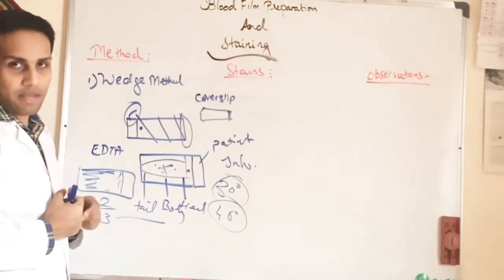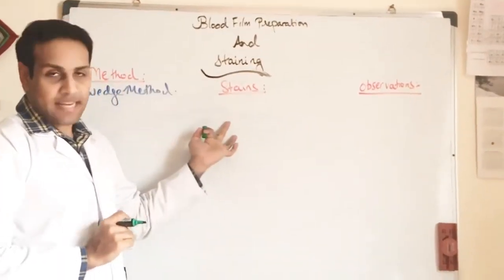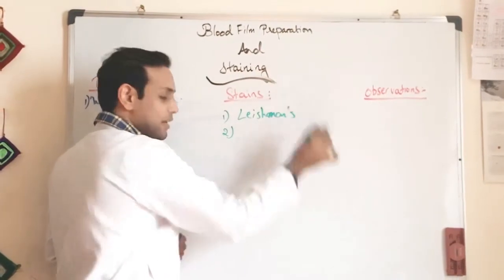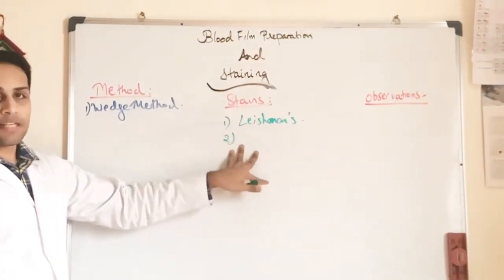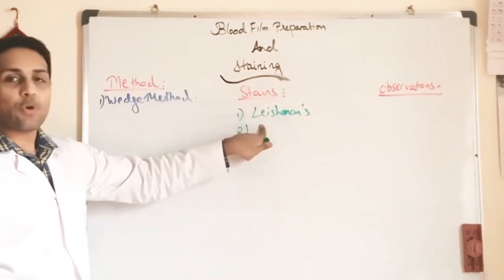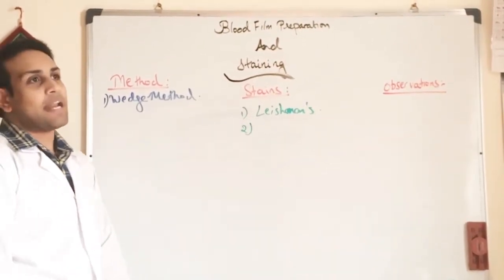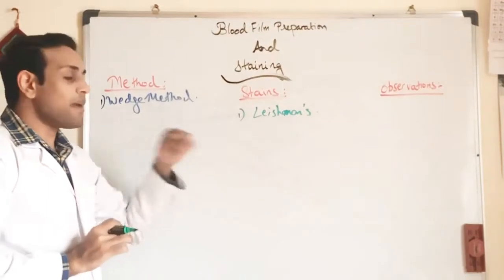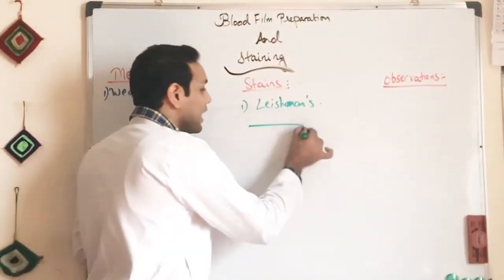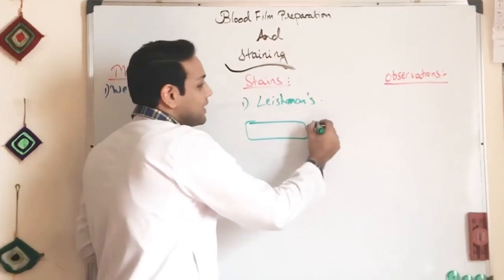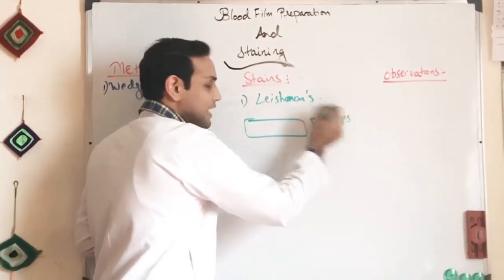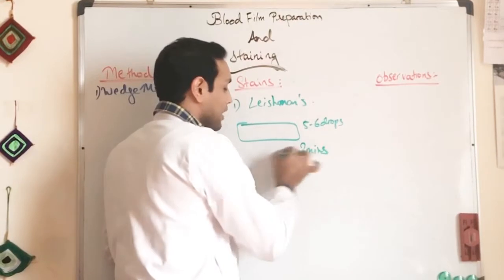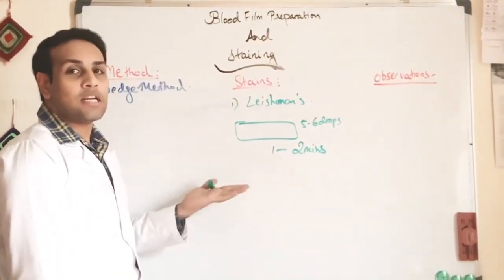Now we move to the staining part. Different stains can be used: Giemsa stain, Field stain, Wright stain. In this practical I am using Leishman stain because it is quicker and simpler compared to others. For the Leishman stain procedure, the first step is to cover the slide with around five to six drops of the stain and leave it for one to two minutes.